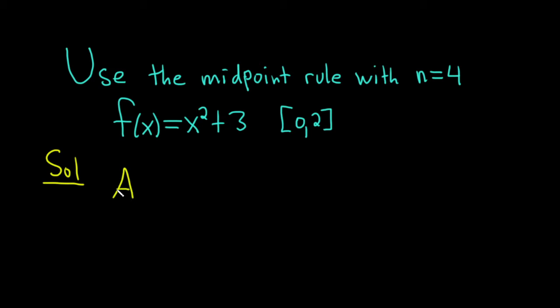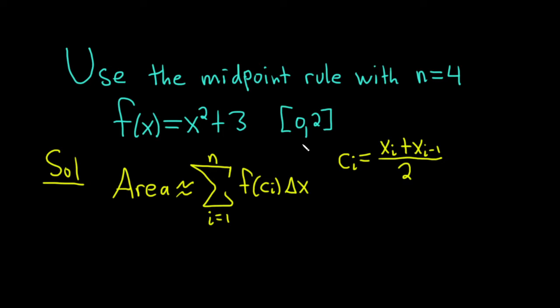So the area is approximately equal to the finite sum as i runs from 1 to n of f of c sub i times delta x. And when we use the midpoint rule, we're using the midpoint of the intervals. So each c sub i is equal to x sub i plus x sub i minus 1 over 2. All right, so we basically just have to work this out and then we have the answer.